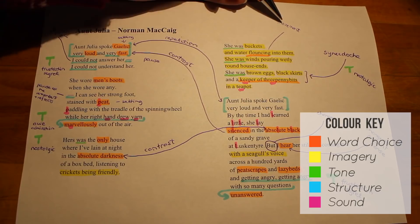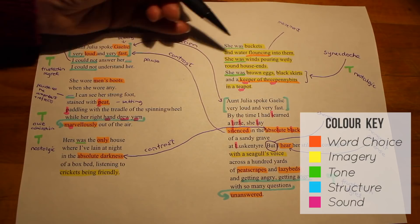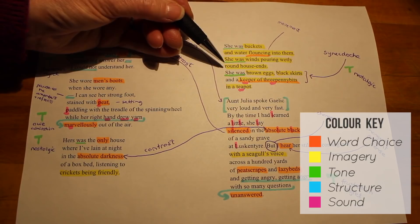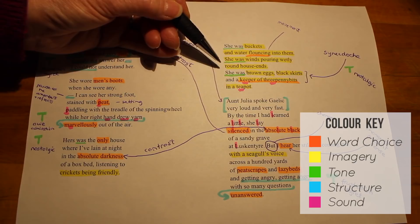And then he says she was winds pouring wetly, lovely alliteration there, which I didn't pick up with the two Ws, round house ends. So you imagine walking along the length of a house and you're in the shelter, you come to the end and suddenly you get slapped in the face almost by the wind. It's so powerful and so dynamic. And this was what she was like.